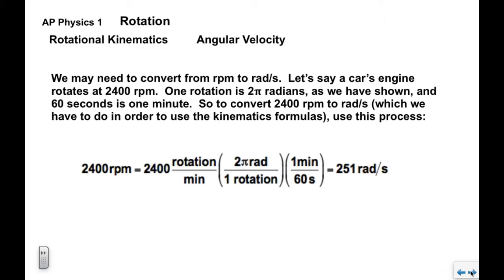We may occasionally need to convert from RPMs to radians per second — for use in kinematic formulas, we want radians per second for omega. For example, a car engine rotating at 2400 RPM: one rotation equals 2π radians, and 60 seconds equals one minute. Using these two conversion factors, RPM's rotations cancel with 1 rotation = 2π radians, and minutes cancel with 60 seconds. So 2400 × 2π ÷ 60 = 251 radians per second.